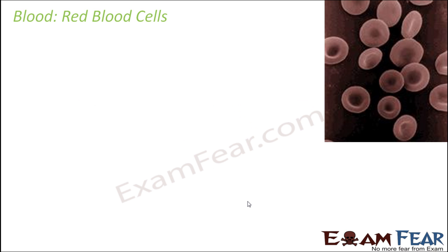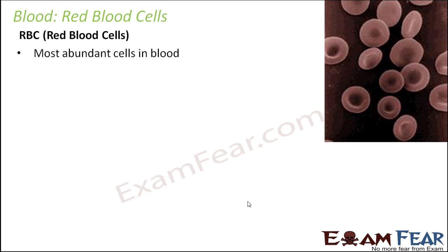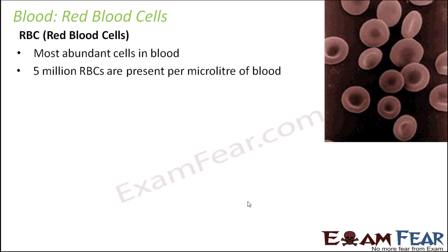Let us now talk about the next component of blood, that is the red blood cells or the erythrocytes or RBCs. These are the most abundant cells in the blood. Almost 5 million RBCs are present in 1 microlitre of blood, which is almost 10 to the power minus 6 litres. Just look at their abundance.